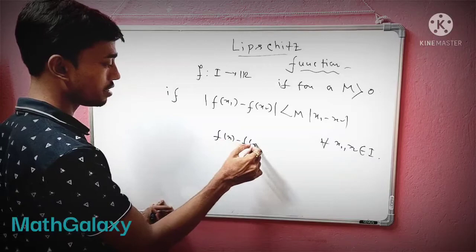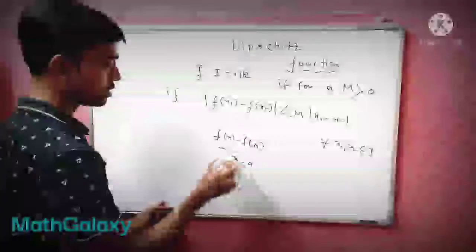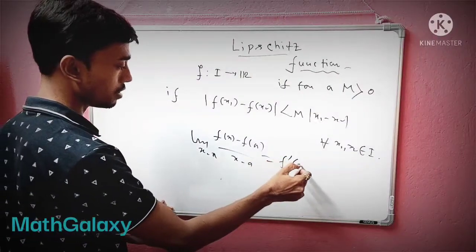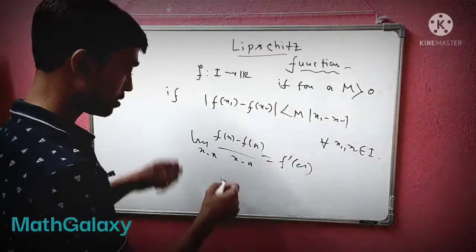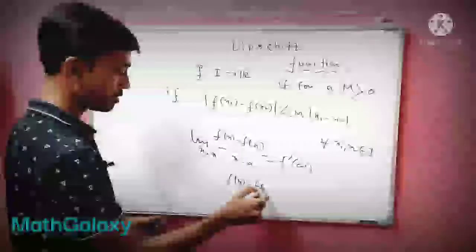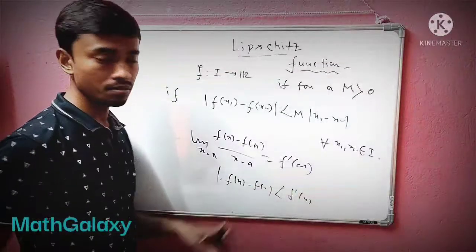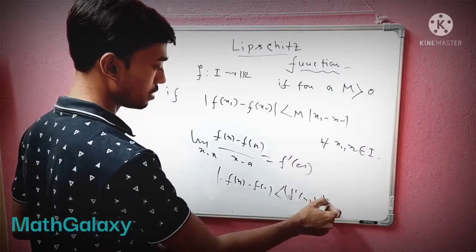What is derivative? f'(a) = lim(x→a) [f(x) - f(a)]/(x - a). And from here, you can see that |f(x) - f(a)| is basically less than f'(a) times |x - a|, which is a positive number.